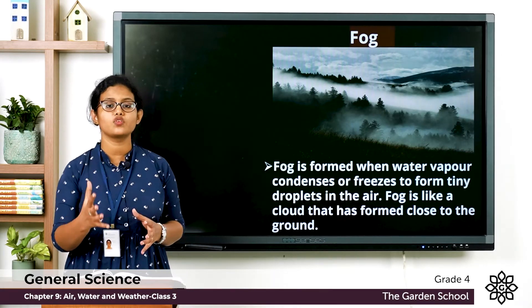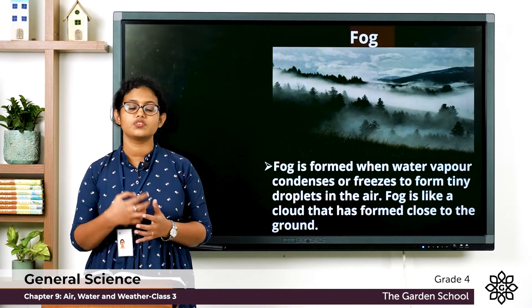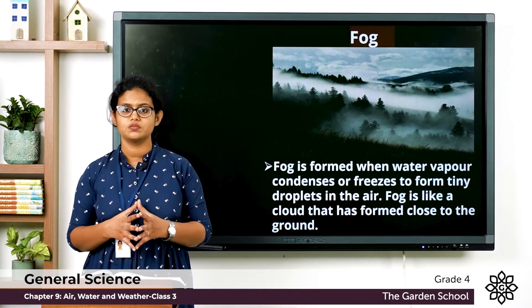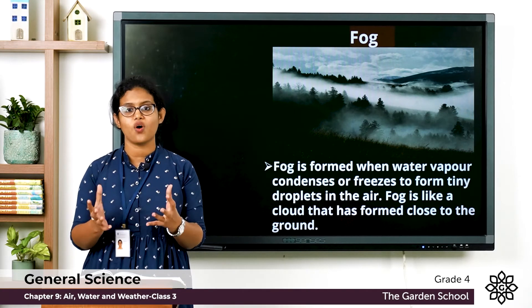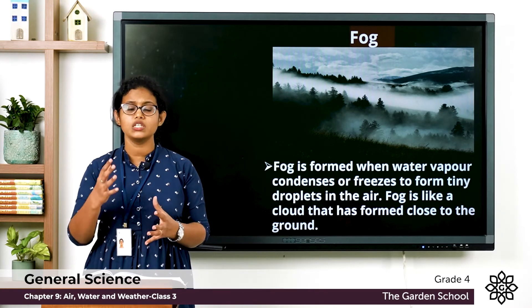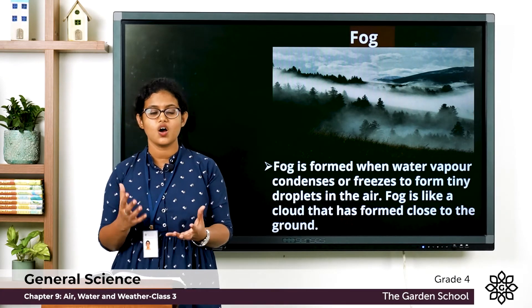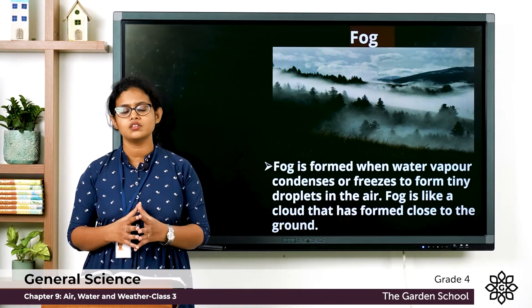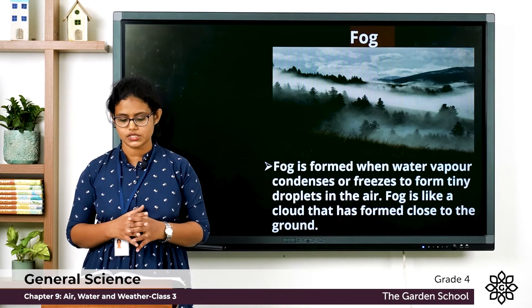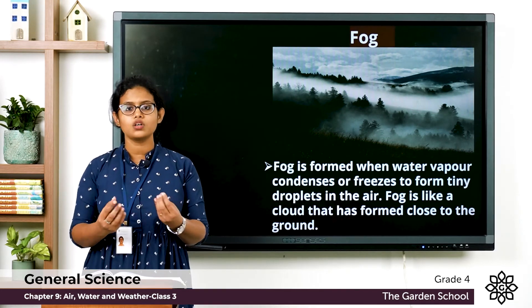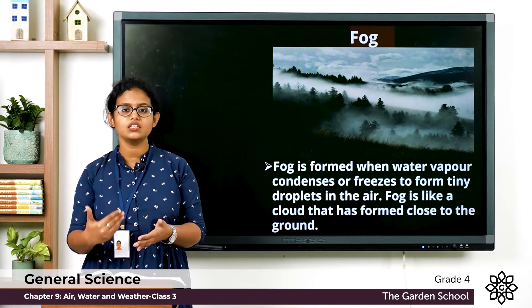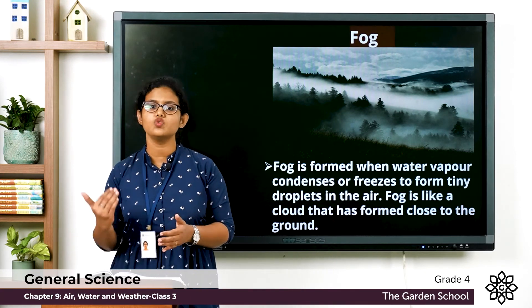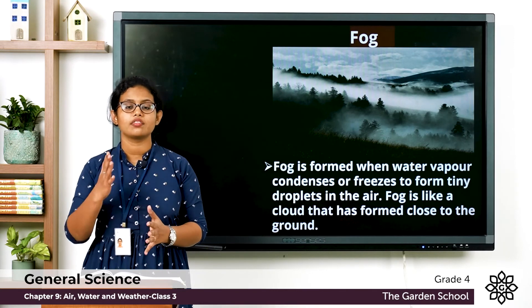Next, let's learn about the formation of fog. Fog is a cloud that touches the ground — it can be thick or thin. Fog is formed when water vapor in the air changes into water droplets. For fog to form, dust or other kinds of air pollution also need to be present in the air. This gives rise to fog.